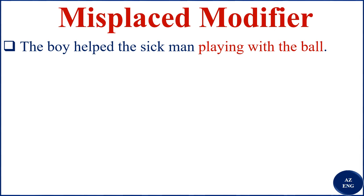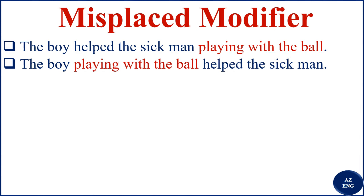So where should the modifier be placed? It should be: 'The boy playing with the ball helped the sick man.' Now it makes sense — the boy was the one playing with the ball, and then he saw the sick man and helped him. That is what misplacing a modifier does.